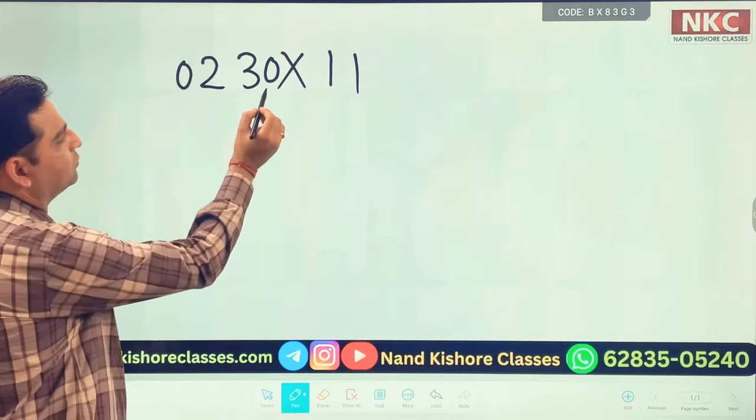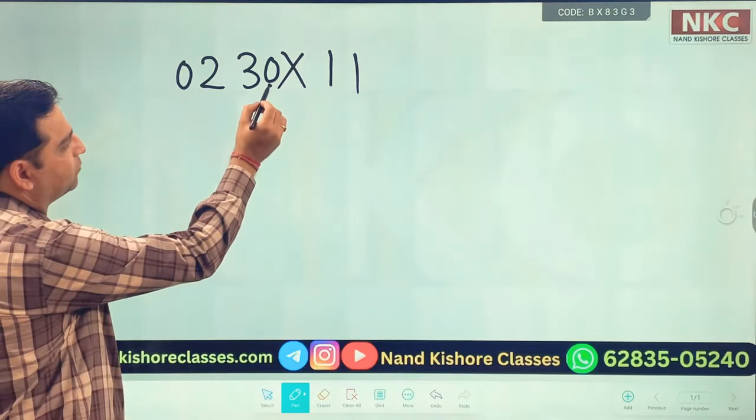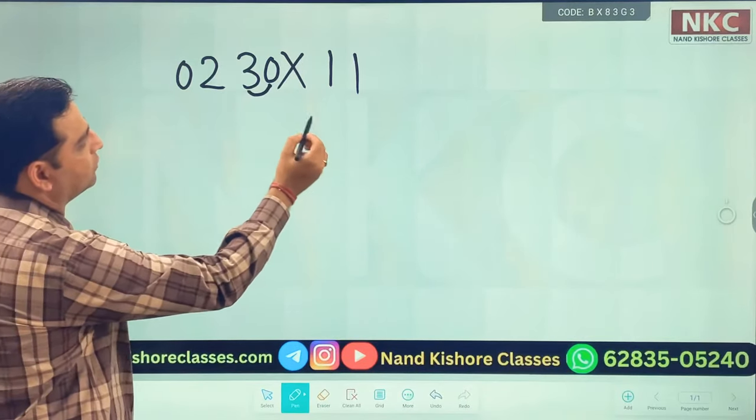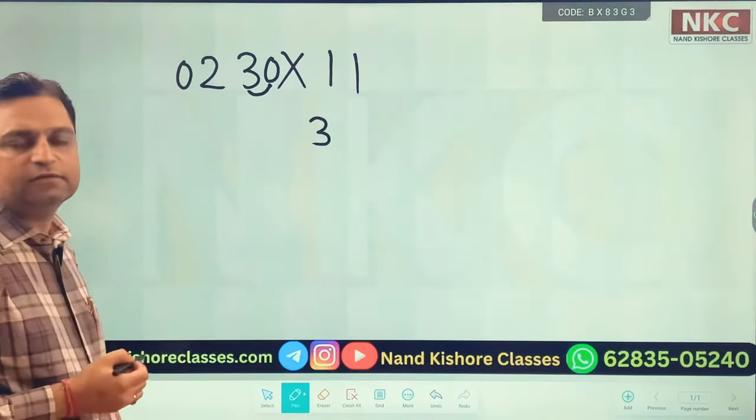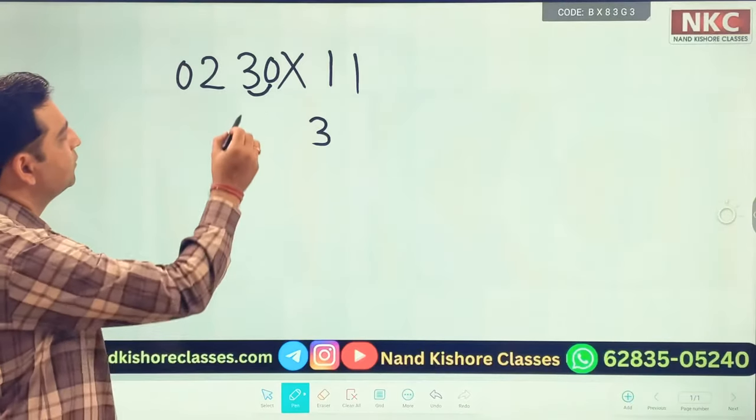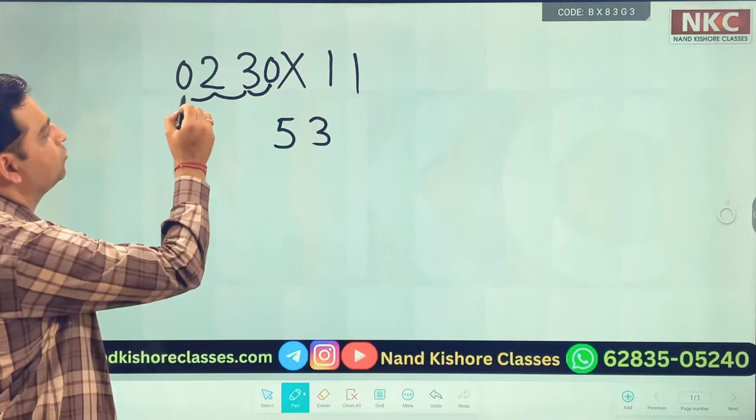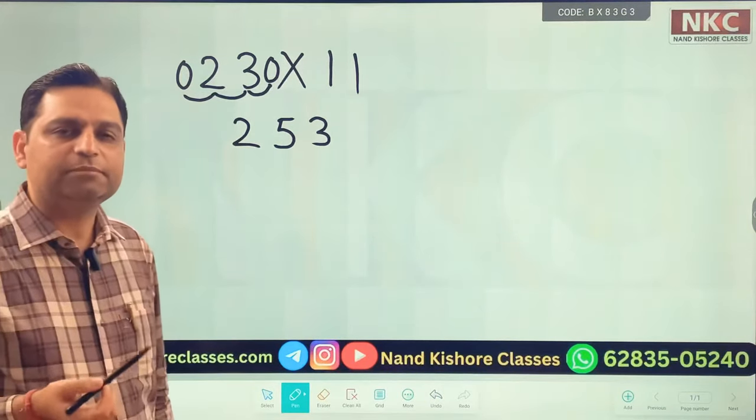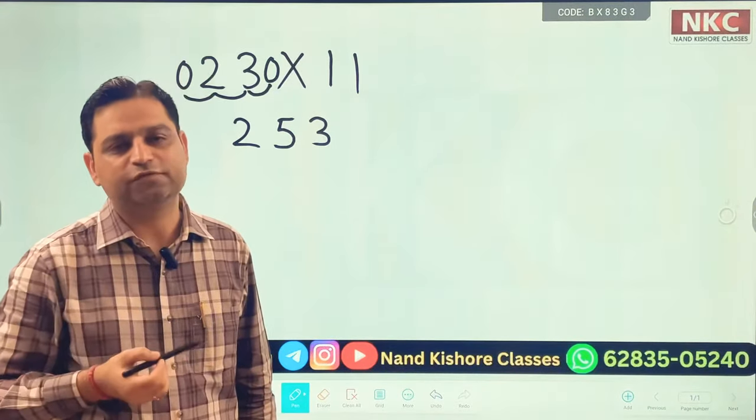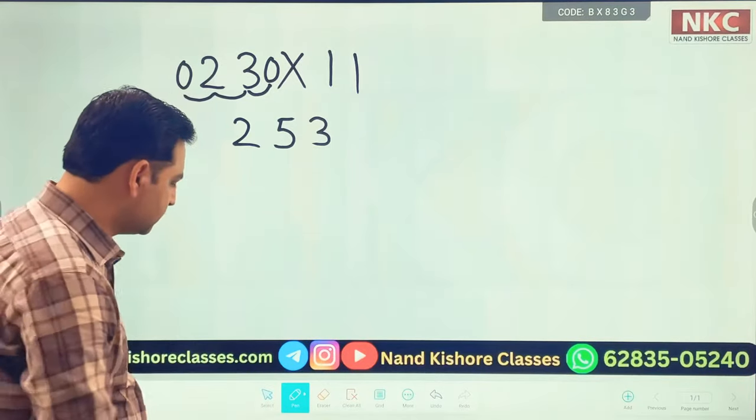What we need to do is start adding from the end like this: 0 and 3, add them, 0 plus 3 is 3. 3 plus 2 is 5, and 2 plus 0 is 2. So 23 multiply 11, its answer is 253. See how easy it is.